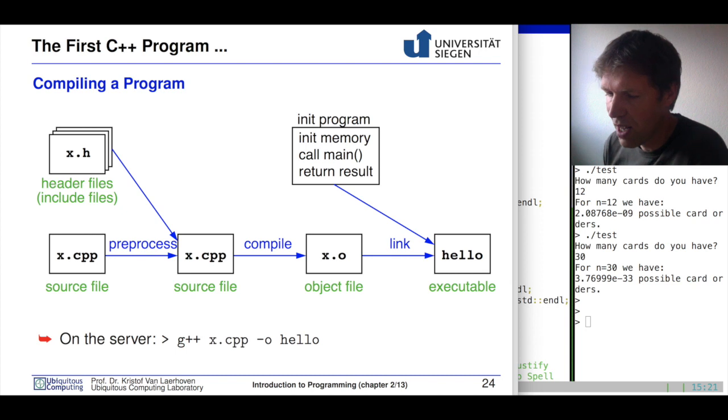So as we've seen, the first thing we need to do when we create a CPP file is we have to use our compiler to create an executable. Now we've seen basically just this step over here where we had our CPP file. And by doing G++ with our CPP file, and with the minus O, we could create our executable on this side over here. Now we'll see in the coming weeks that things are a little bit more complicated, especially when you have more files. And we will have more files later on.